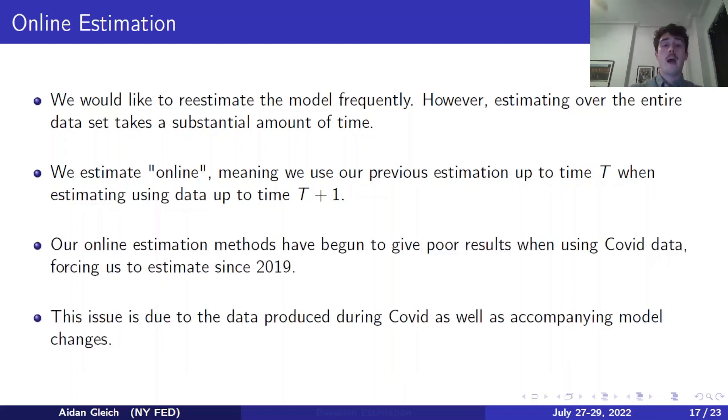Now, a problem we've been having is that our online estimation methods have started to get poor results when using COVID data, forcing us to estimate since 2019. So we use an estimation up to 2019, and then we estimate from 2019 onward. This is due in part because of the data that was produced during COVID. If anybody who pays attention to macroeconomic data would know that COVID produced quite exceptional values during that time. The data itself is a problem, as well as the model changes that we had to incorporate in order to effectively model that data have also caused problems. And I'm going to walk through some of those model changes that we've made now.